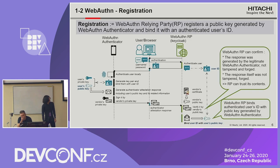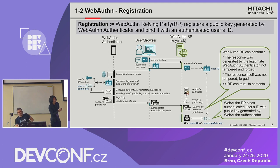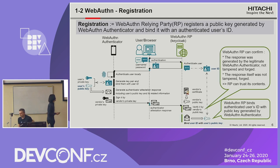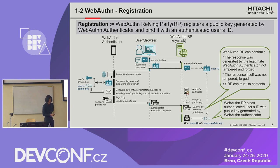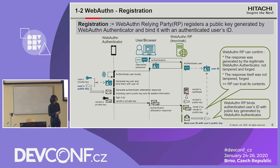The registration operation is where the WebAuthn Relying Party, like Keycloak, registers a public key generated by the WebAuthn Authenticator — like your smart device — and binds this public key with the user ID that the WebAuthn Authenticator manages. What gets registered is the public key generated by the WebAuthn Authenticator. This registered public key can then be used afterwards in the authentication operation.